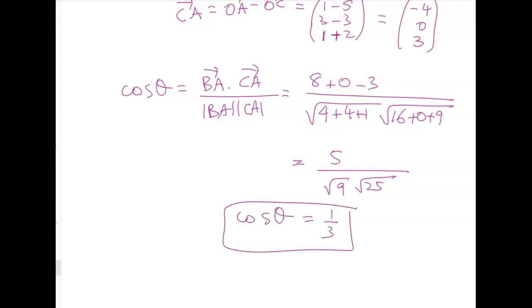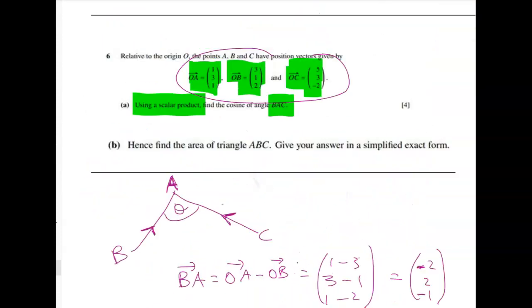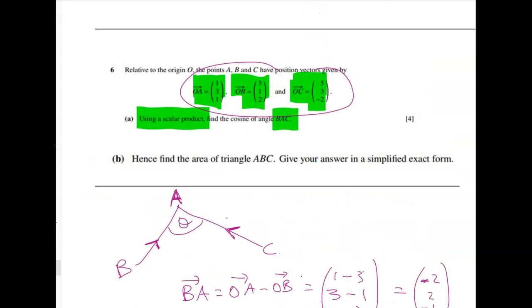So we could go ahead and get an approximate value for theta from that, but I'm not asked for that, and it's actually going to put me on a wrong pathway for the next bit. So we're asked to find the cosine of angle BAC, and we've done that. So that's 4 marks.